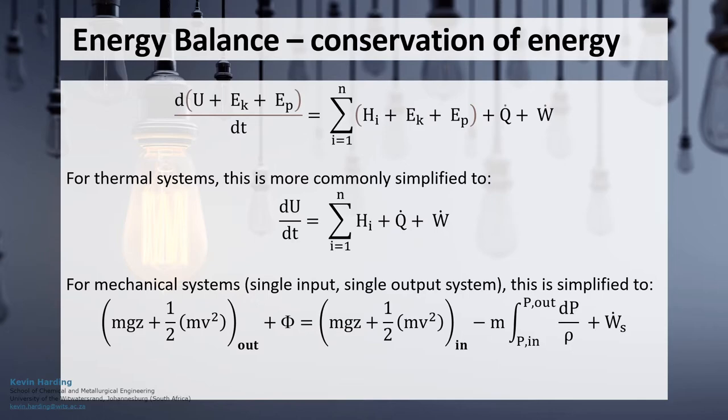In a thermal system, this is more commonly simplified to dU/dt is equal to the sum of Hi for i equals 1 to n plus Q plus W.